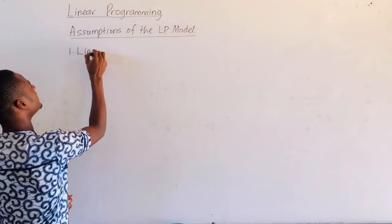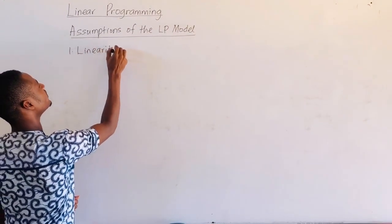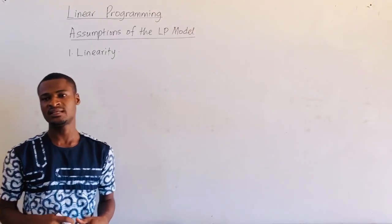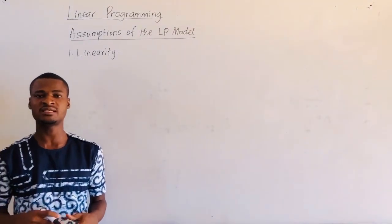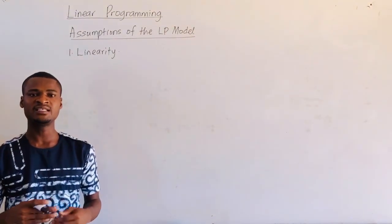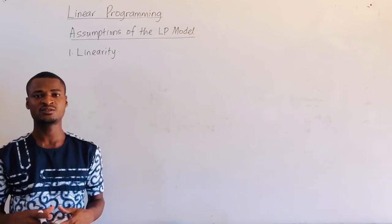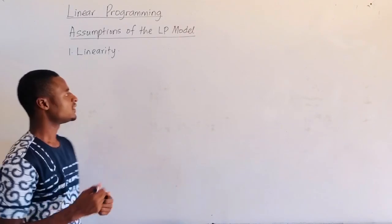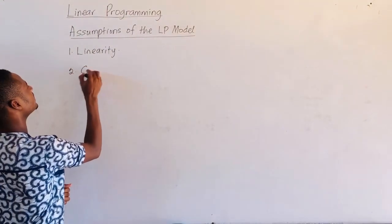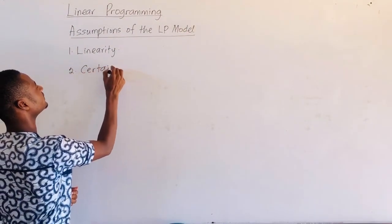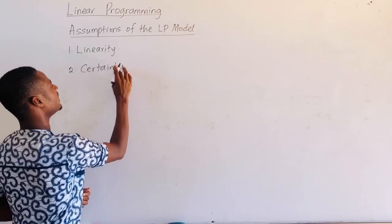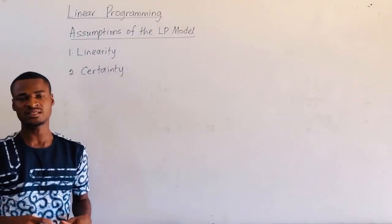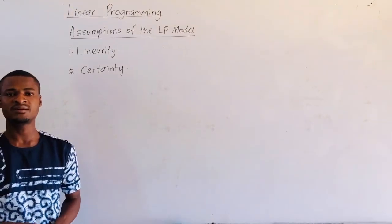The first assumption of the linear programming model is linearity, which simply means that the decision variables used in the model must have a linear relationship with each other, so that when they are graphed, they will form a straight line. The second assumption is certainty, and this simply means that the decision variables that are used in the model must always be certain.